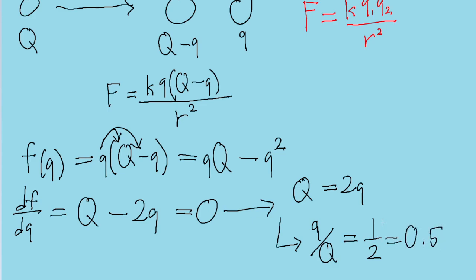So this means that when this function is maximized, the ratio small q to big Q is equal to 1 half, or 0.5. And that is the answer to this problem.